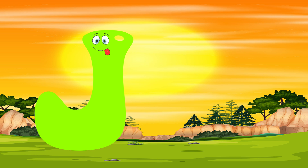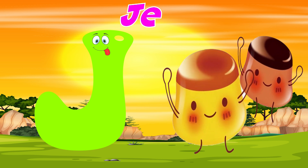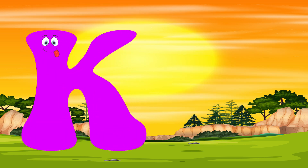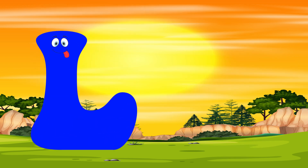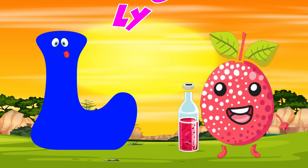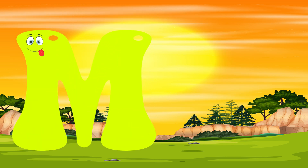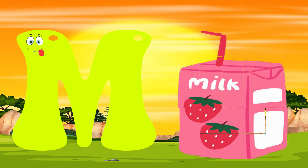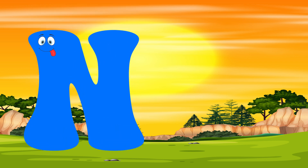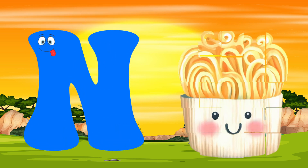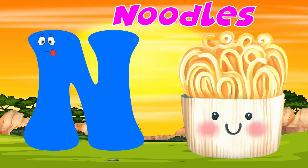J. J is for jelly. K. K is for kitty. L. L is for ichi. N. N is for noodles.